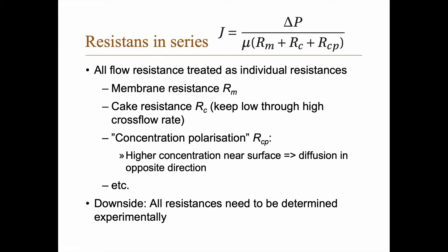In the resistance-in-series model, we treat all flow resistances as individual resistances: the membrane resistance R_m, the cake resistance R_c, and the concentration polarization resistance. We try to keep the cake resistance low by having a high cross-flow rate, which shears away the cake that forms.